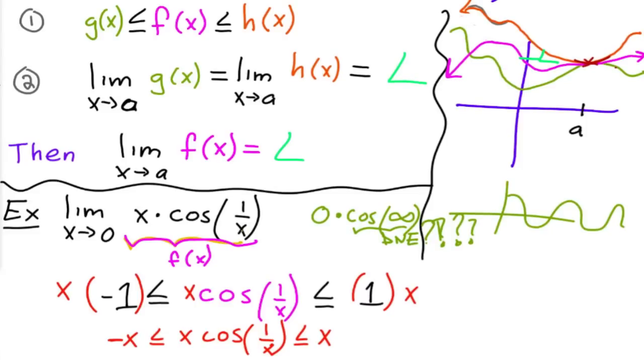So then you know that x cosine of x is always between positive x and negative x. That was the first step.